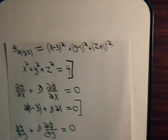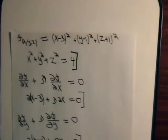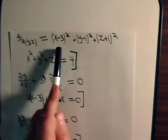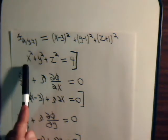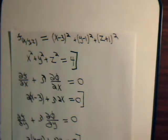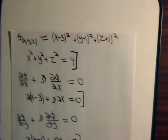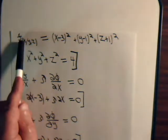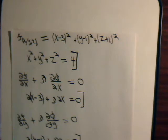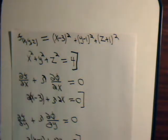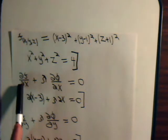For our current problem, it is a function not just of x and y, but of x, y, and z. This is what we want to optimize. Our constraint equation is also a function of x, y, and z. So instead of having two sets of partial derivatives to take, we're going to have three sets of partial derivatives to take.